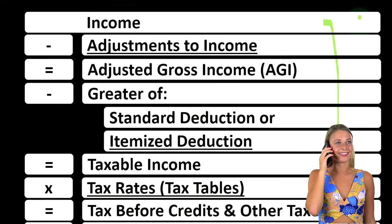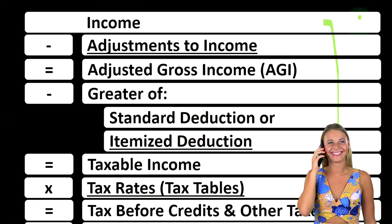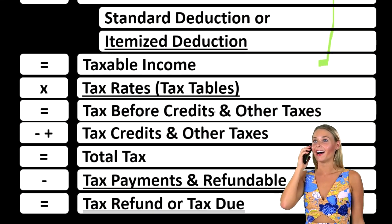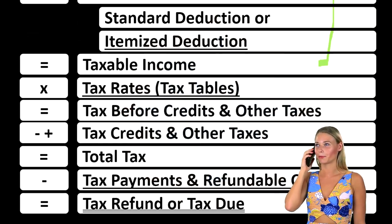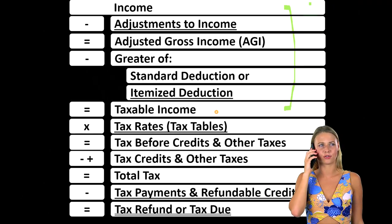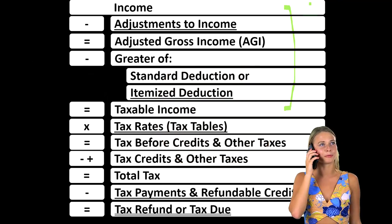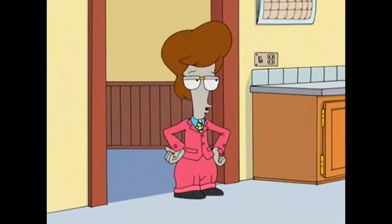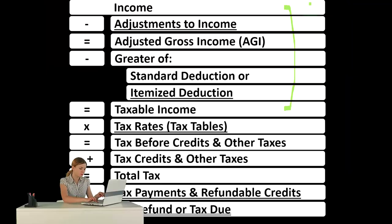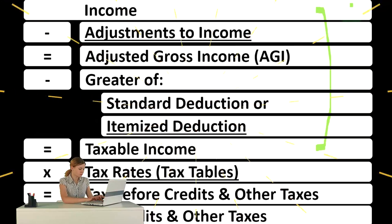Unemployment happens when you are employed, then cease employment, and the state — in certain circumstances — may compensate you. The general idea is that a sudden loss of employment can be a shock, and you might need some temporary wages in order to find and get employment elsewhere. It's supposed to help during that transition period.